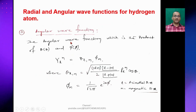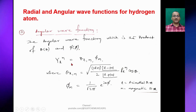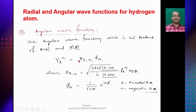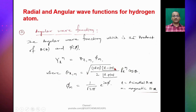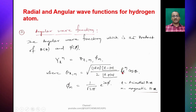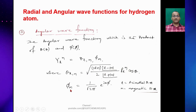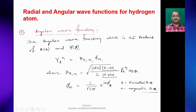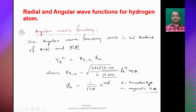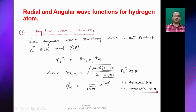The angular wave function Y_lm is the product of Θ_lm and Φ_m. Θ_lm(θ) = √[(2l+1)(l−|m|)! / 2(l+|m|)!] · P_l^|m|(cosθ), and Φ_m(φ) = (1/√π)·e^(imφ). Here l is the azimuthal quantum number and m is the magnetic quantum number.